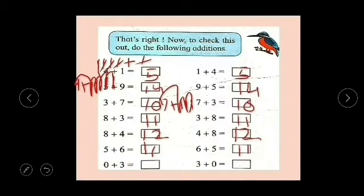0 plus 3. As you all know, any number which when we add to the 0, we will get the same number. 0 plus 3 is 3. 3 plus 0 is also 3.